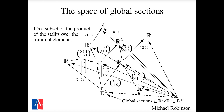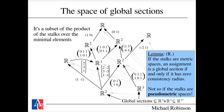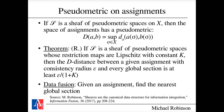Assignments with zero consistency radius are exactly the global sections. If you're working with metric spaces — which is the typical case — you can think of global sections and assignments with zero consistency radius as being the same thing. Given a sheaf of pseudometric spaces on a poset with the Alexandrov topology, you can build a pseudometric on the space of assignments by lifting up to the product.